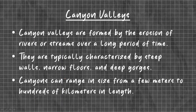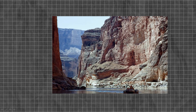Canyon valleys are formed by erosion of rivers or streams over a long period of time. They are typically characterized by steep walls, narrow floors, and deep gorges. Canyon valleys can range in size from a few meters to hundreds of kilometers in length. Here is a picture of a canyon valley and river.